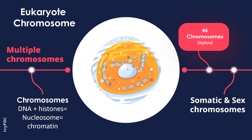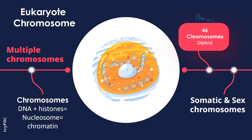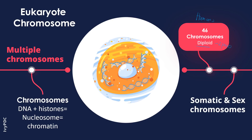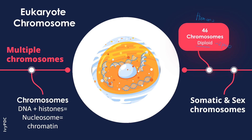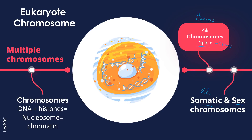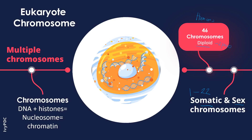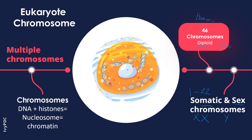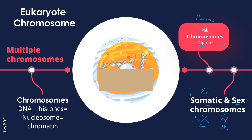Humans have 46 chromosomes, and each one have two pairs, and we call this condition as diploid. There are two forms of chromosomes: the somatic and the sex chromosomes. There are 22 pairs of somatic chromosomes numbered from 1 to 22, and for sex chromosomes, we have X and Y — double X for female, and XY for male.